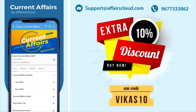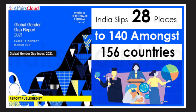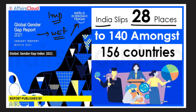The first news is the Global Gender Gap Report — a very important report. This report is published by WEF, which stands for World Economic Forum. Recently this report was released, and India has slipped 28 places. India's rank in the Global Gender Gap Report 2021 is 140 out of a total of 156 countries.